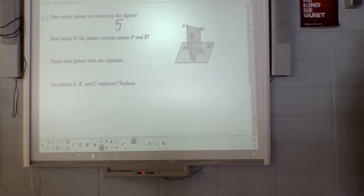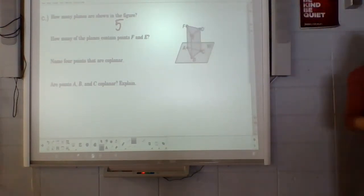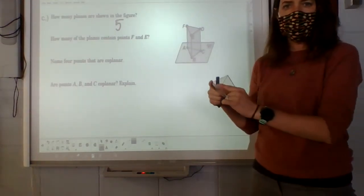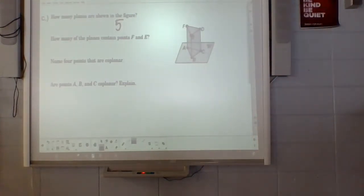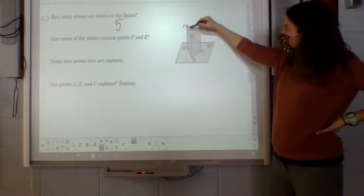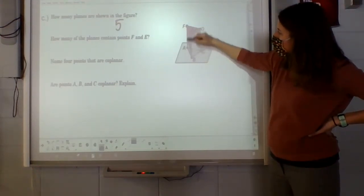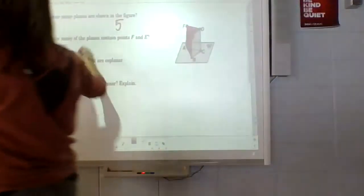How many of the planes contain points F and E? It has to contain both of them. So if I picked two of these corners here, that's hard to see. Yeah, what do you think? Two of them? Yeah, so this top one would include that, and then this one on the side here. They both would include those two parts. So I'd say two.